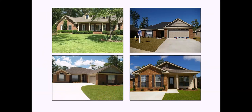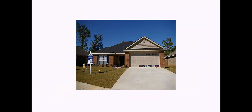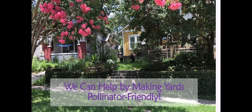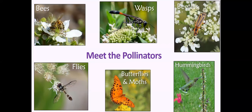Here is what typical new construction looks like: a house, more pavement, lots of grass, and a few plants that in general offer very few floral resources. But if we were intentional about providing resources and habitat, what a difference that would make as we expand into increasingly urban and suburban areas. We actually can help by making our yards more pollinator friendly. What pollinators might we expect to see? Bees are the obvious choice, but we also have wasps, beetles, flies, butterflies, moths, and hummingbirds.